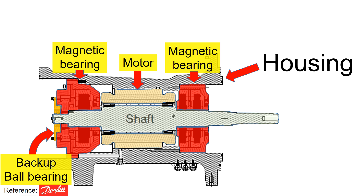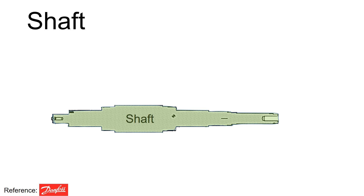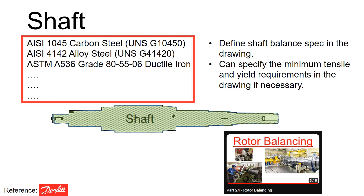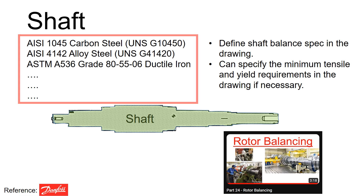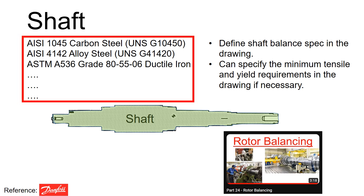Today our emphasis is on examining the shaft. Shafts can be crafted from various materials including 1045 carbon steel, 4142 alloy steel, ductile iron, and others.